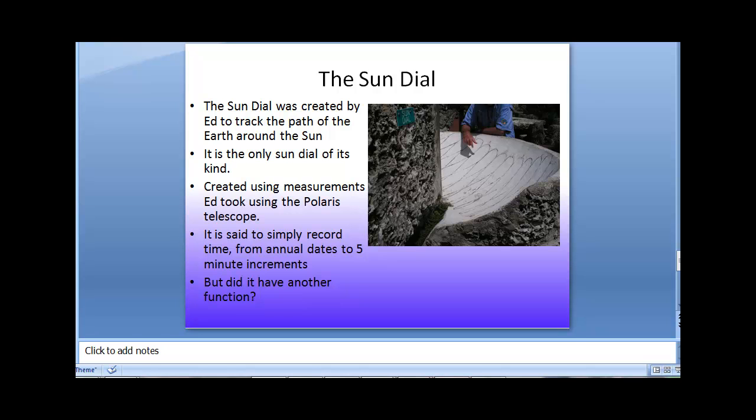According to the Coral Castle information, it was said to simply record time from annual dates to 5-minute increments. Ed was said to have constructed it and then numbered the sundial from 9 a.m. until 4 p.m. It is said that those were the only hours that a man should work according to Ed, and he was not interested in any other hours.